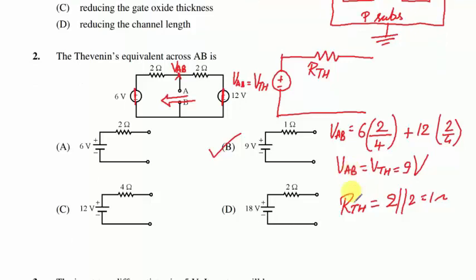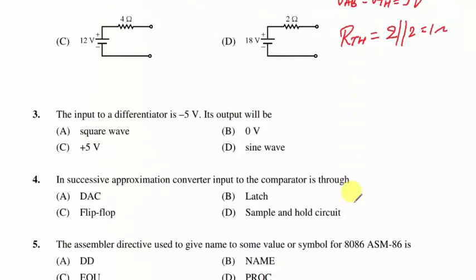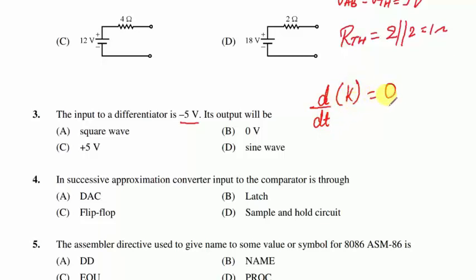Question 3: the input to the differentiator is −5 volts. Differentiation of a constant value — −5 volts is a DC value — yields 0 volts. Hence option B follows.